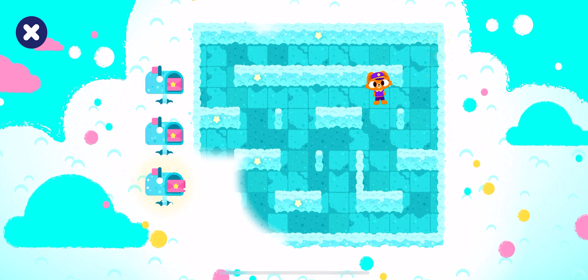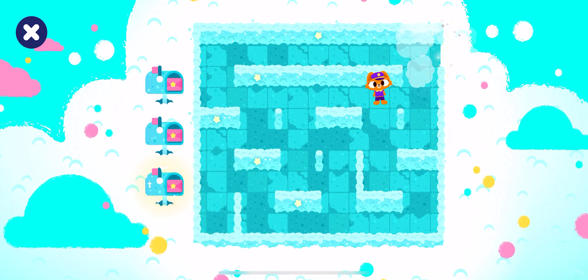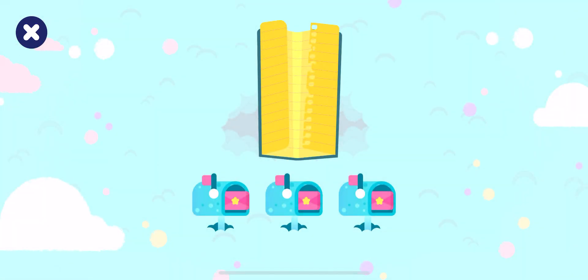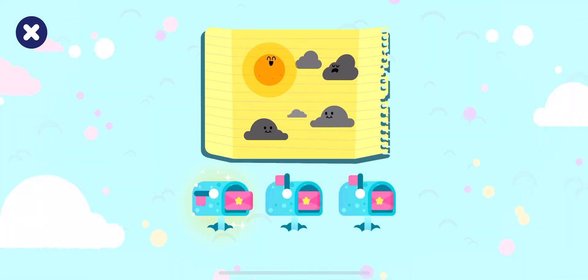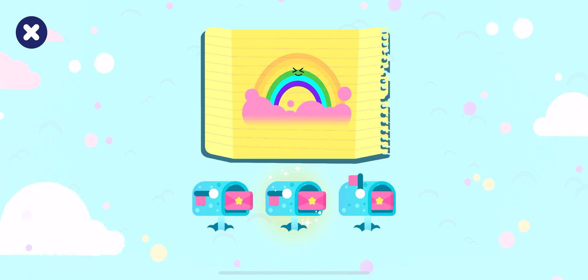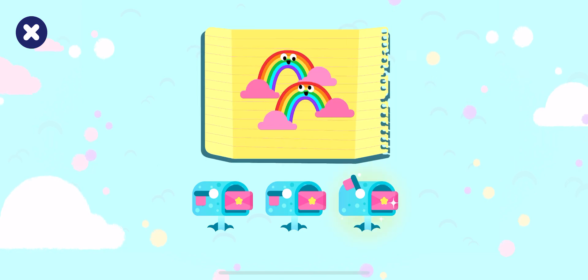You unlocked the door. Rainbows are made by raindrops and sunlight. Rainbows have all the colors you can see. You can even find double rainbows in the sky.